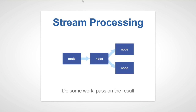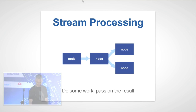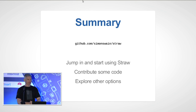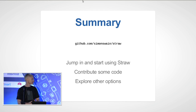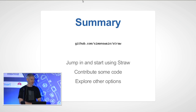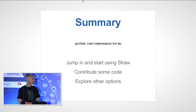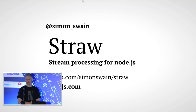To sum up: stream processing gives you a topology of nodes connected with pipes, where each node processes a small part of the problem. Please jump in and start using Straw — it's on GitHub, contribute some code. This is a really emerging idea in the technology industry. Straw is a toy that'll help you get started and might solve some real-world problems, but there are industrial-strength systems out there. After playing with Straw, explore what suits your particular problem. Straw — stream processing for Node.js. Thank you.